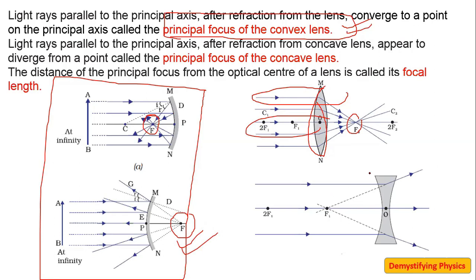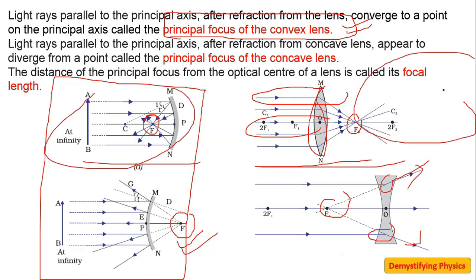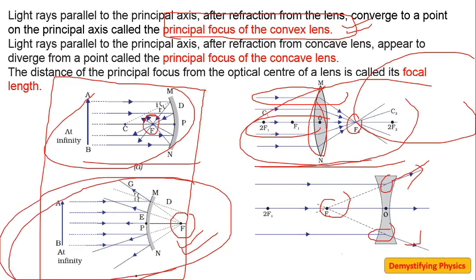Similarly, in a concave lens, rays which are parallel after refraction diverge, and it appears that the rays are coming from one point — this point is called the principal focus of the concave lens. Remember, mirrors and lenses are very similar: concave mirror and convex lens are similar, and convex mirror and concave lens are similar. So if you know mirrors well, you will understand lenses well too.